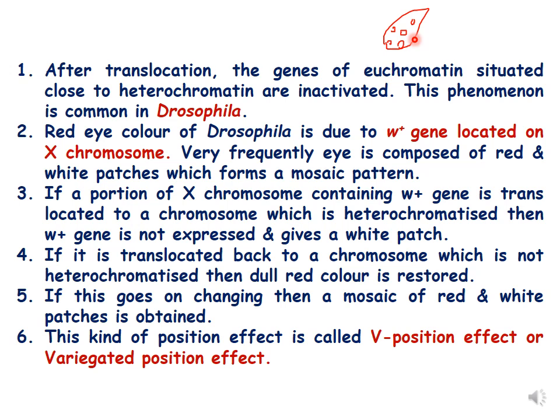The mosaic pattern is similar to variegation patterns seen in leaves with patches of yellow and green. Similarly, we can see a mosaic pattern of red and white patches in the eyes of Drosophila once translocation of the W+ gene has occurred. After translocation, when genes of euchromatin become situated close to heterochromatin, they are inactivated. If a portion of the X chromosome containing the W+ gene is translocated to a heterochromatized chromosome, the W+ gene is not expressed.